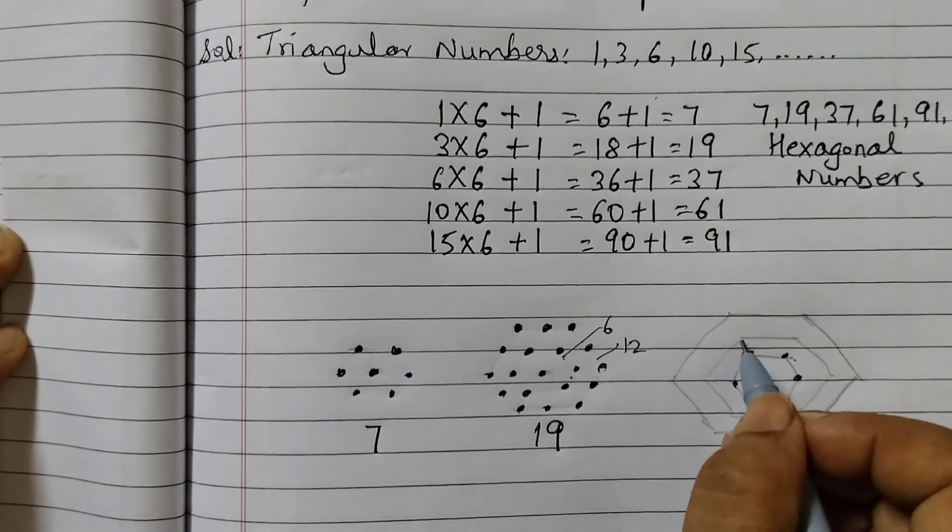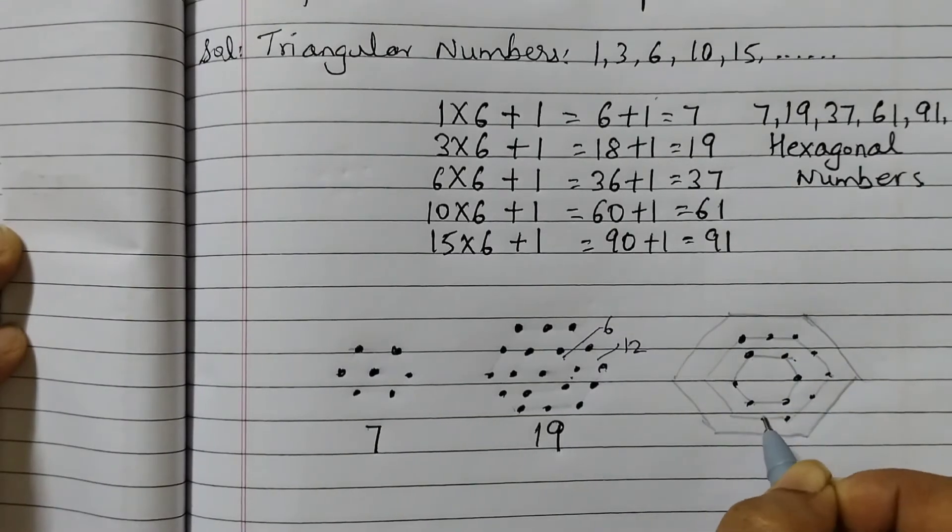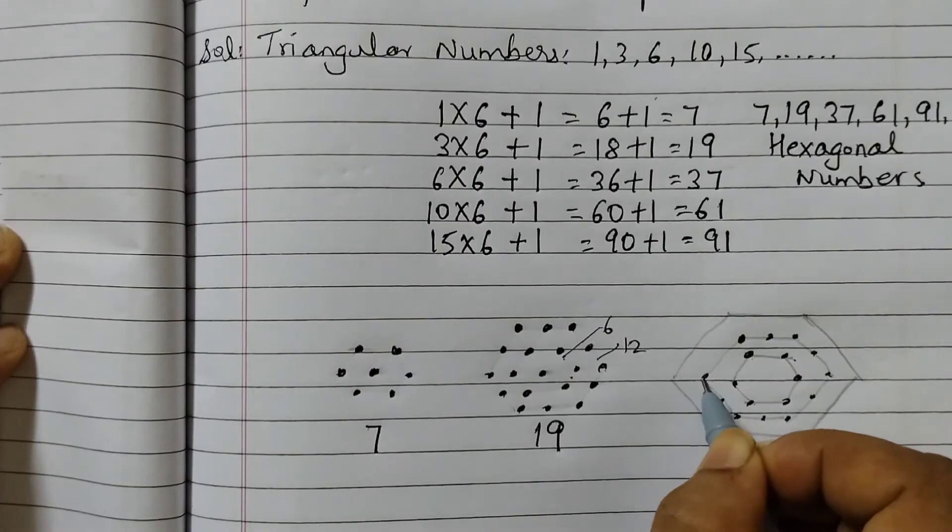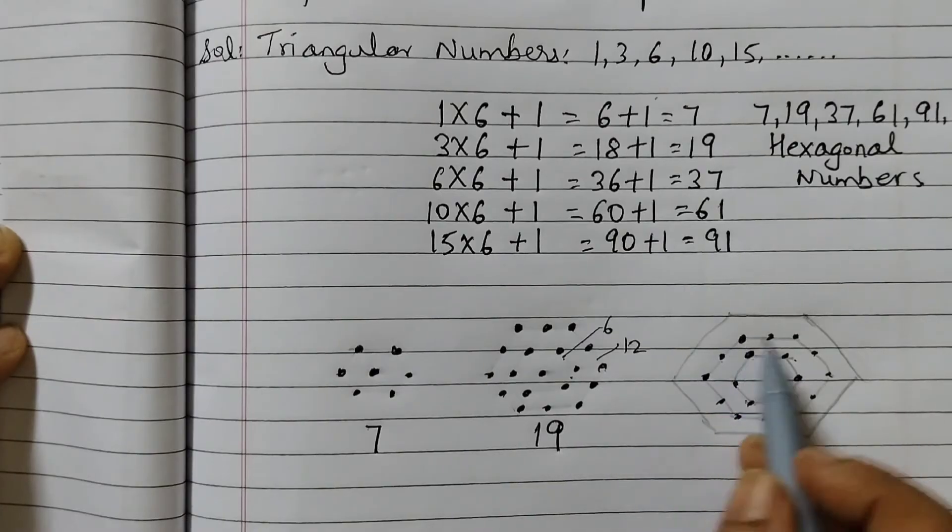So now two dots. Next three dots. 1, 2, 3, 4, 5, 6, 7, 8, 9, 10, 11, 12. 6 dots, 12 dots. Now here it will be 18 dots.